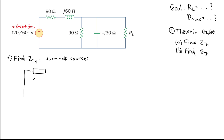That combined impedance is 80 + j60 Ω, and then this element here is 90 in parallel with -j30.